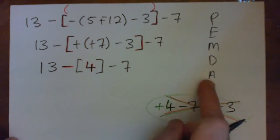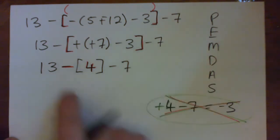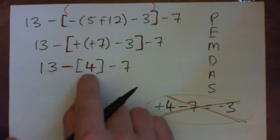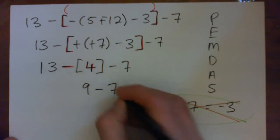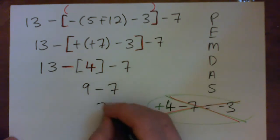So we can subtract from left to right. So we'll do it two ways. We'll subtract from left to right. 13 minus 4, remember that's a minus 4, not a positive 4. 13 minus 4 is 9, and 9 minus 7 is 2.